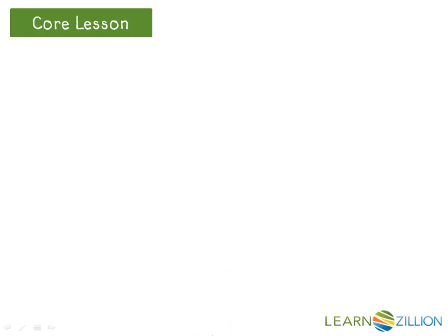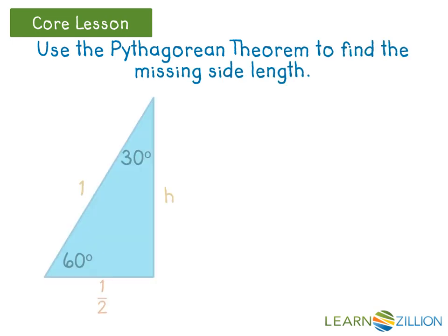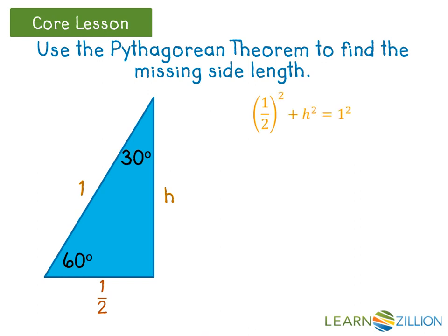Starting with one of the 30-60-90 triangles, we can use the Pythagorean theorem to find the missing side length. The Pythagorean theorem is a squared plus b squared equals c squared, where c represents the hypotenuse. In this case, we have one-half squared plus h squared equals one squared.